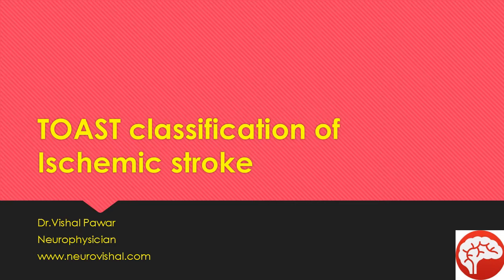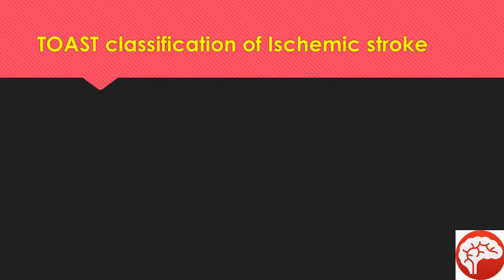In this video, I am going to discuss the TOAST Classification of Ischemic Stroke. The TOAST classification scheme for ischemic stroke is widely used and has good inter-observer agreement. The TOAST system attempts to classify ischemic stroke according to the major pathophysiologic mechanisms recognized as the cause of most ischemic stroke. There are five TOAST subtypes of ischemic stroke.